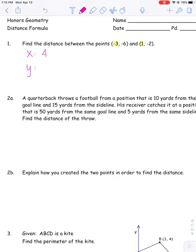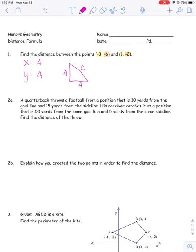For the X's, we have the numbers negative three and one — those are four apart. And for the Y's, negative six and negative two, those are also four apart. So what this ends up creating is a right triangle with sides four and four. Then our side C here is the distance between the two points. If you want to plot the points on the graph, you can see how it does create a right triangle — otherwise this would just be kind of a shortcut to getting there.